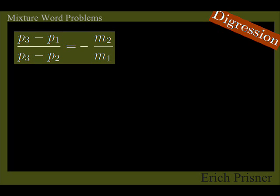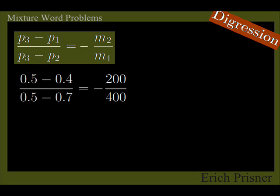In our example above, the resulting percentage, 0.5, 50%, is 0.1 away from 0.4 and 0.2 away from 0.7, so the distances to P1 and P2 behave like 1 to 2. The reason is that the masses of the ingredients behave like 2 to 1.